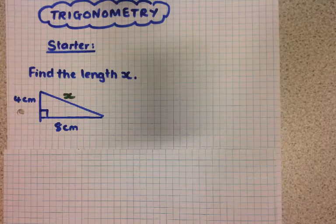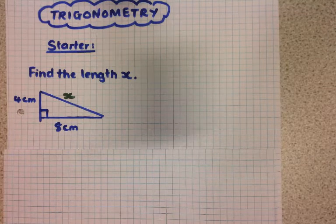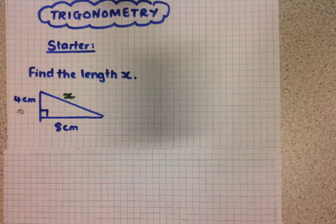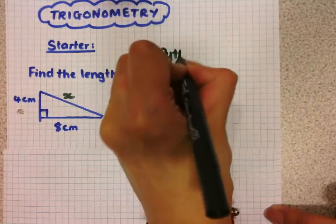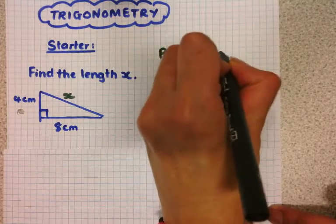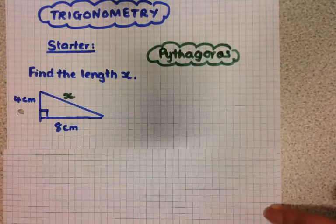Okay, hopefully you've had a go at trying the starter. So we're finding the missing length x. You may have noticed that it's a Pythagoras problem. So this one is a Pythagoras problem, not a trigonometry problem.